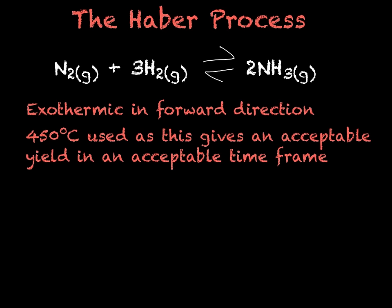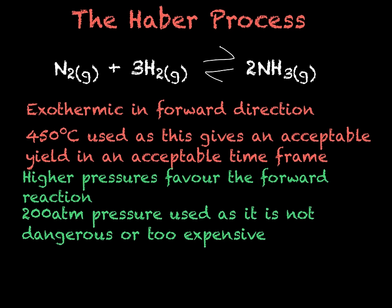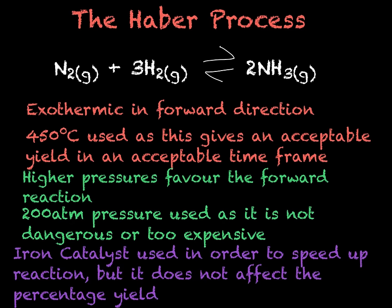In regards to pressure, we can see from the reaction that a higher pressure would favour the forward reaction. This is because we have four molecules on the left-hand side and only two molecules on the right-hand side. This means that we want to use as high a pressure as possible in order to force the equilibrium to the right so that we get more product. However, we can't use too high a pressure as this would make the equipment too dangerous to use and make the plant too expensive to build. Therefore, we use a pressure of 200 atmospheres. This temperature and pressure are known as the Haber compromise. An iron catalyst is also used to make the reaction go faster, though this doesn't affect the percentage yield. Any unreacted nitrogen and hydrogen gas can be recycled back into the system to react and form ammonia.